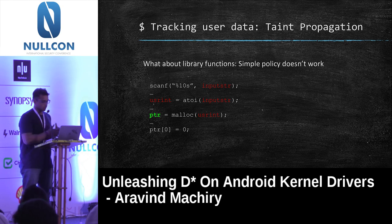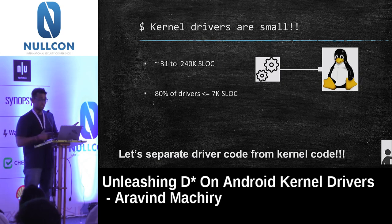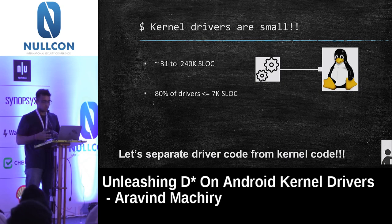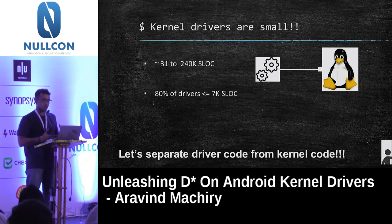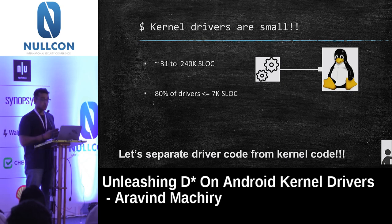To track user data, we need to solve two major problems: pointer analysis and taint propagation. Real-world code is complex, but kernel drivers are actually small. I did analysis on kernel drivers for four different vendors — the size ranges from 31 lines to 240k source lines, but 80% of drivers are less than 7,000 lines of code. This is quite small for static analysis tools. If we can separate driver code from the actual kernel, we can do a lot more precise analysis.